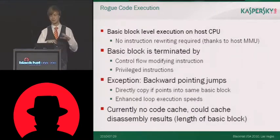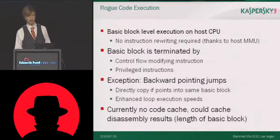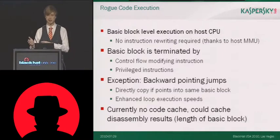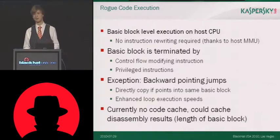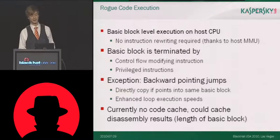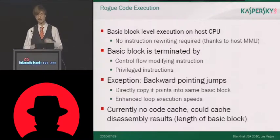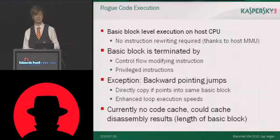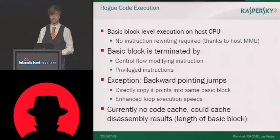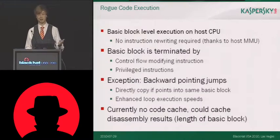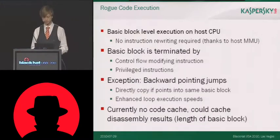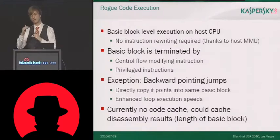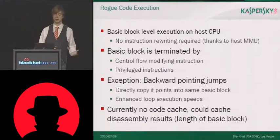We don't need the time for reassembling rewritten code, generating that code, and so on. We take basic blocks and execute them on the host CPU. A basic block, formally, is a sequential flow of instructions terminated by either control-flow-modifying instructions such as return, call, jump, conditional jumps, or privileged instructions like syscall, sysenter, in, out — if you see them in user land. We always extract one of these basic blocks, put it on the host CPU, execute it in the isolated environment, and then continue to the next basic block.